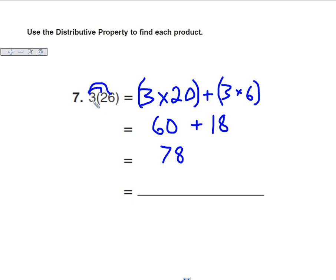And you can use the distributive property in your head. 3 times 26, I don't need to write it down. I can think, 3 times 20 is 60, 3 times 6 is 18, 60 plus 18 is 78.